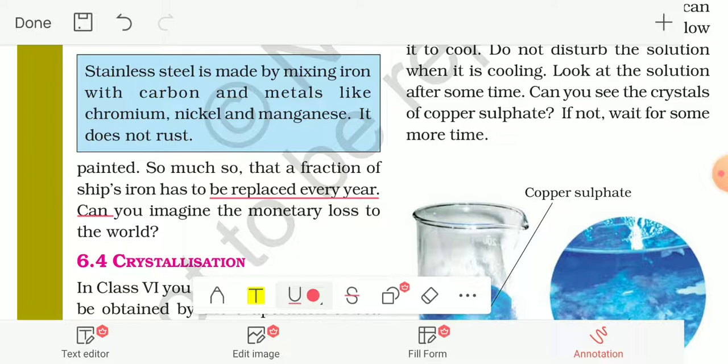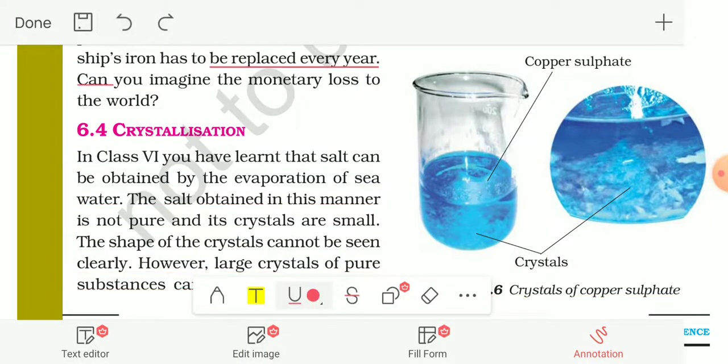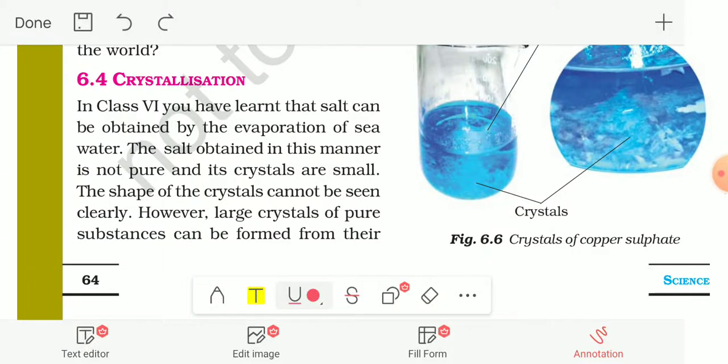In class 6, you have learned that salt can be obtained by evaporation of sea water. The salt obtained in this manner is not pure and the crystals are small.